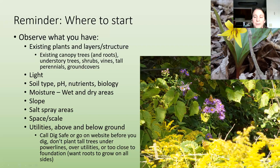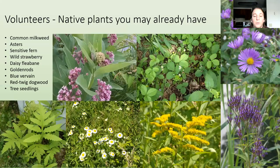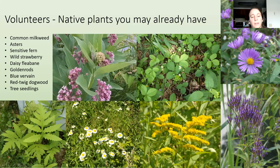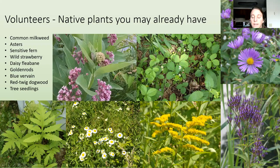I wanted to put in a picture of trout lily because it's blooming now. Also, watch out for native volunteer plants that you have. These are just a few that are commonly found in people's yards: common milkweed, wild strawberry, New England aster, sensitive fern in wetter areas, daisy fleabane — it's a native annual — goldenrod, and blue vervain.